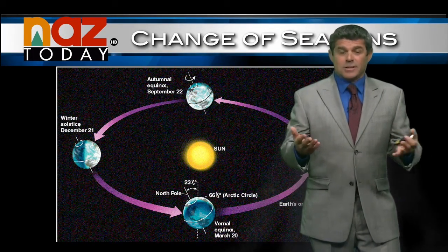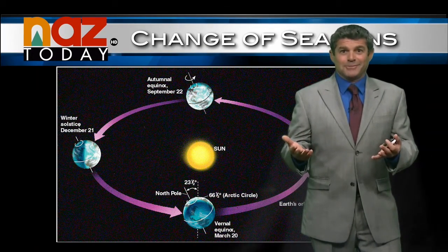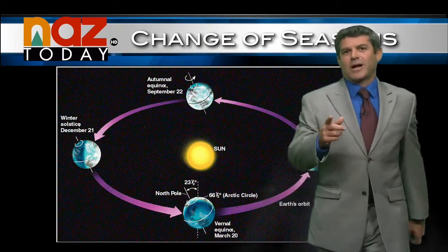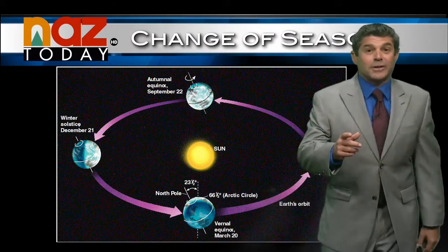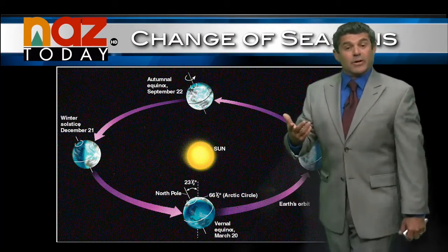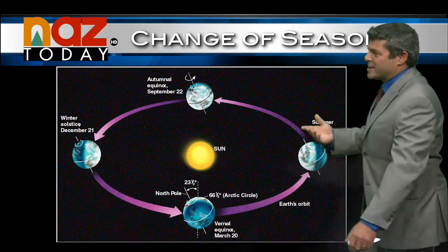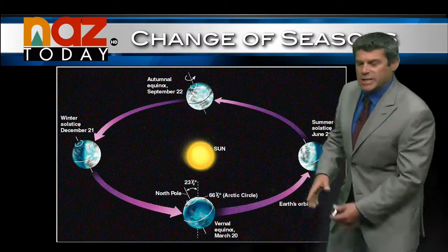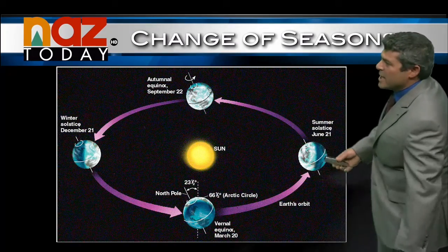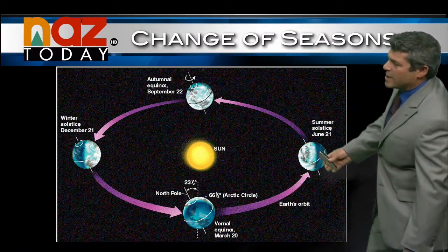Kids, change of the seasons — what causes it? I heard a couple right answers out there. It's the tilt of the earth. If the earth wasn't tilted, we'd have no seasons. But because it's tilted, here we are in summer.